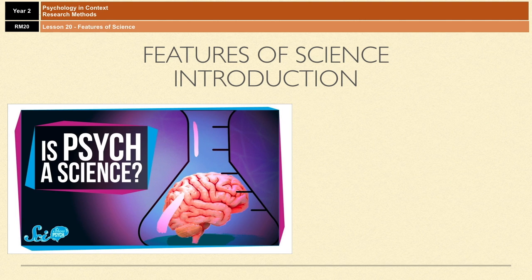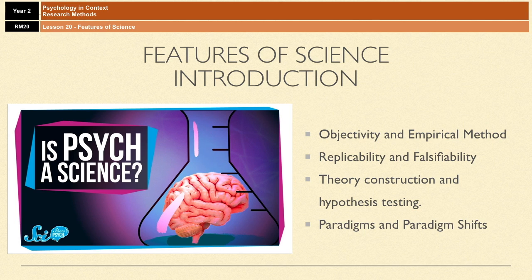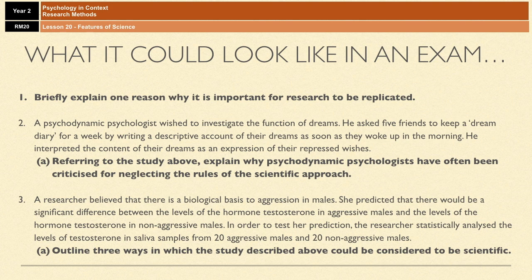The features that all sciences should have are as follows: objectivity and the use of the empirical method; replicability and falsifiability; theory construction and hypothesis testing; and the existence of paradigms and paradigm shifts. Before we go on to what these things actually are, we'll have a little look at what these could look like in an exam.